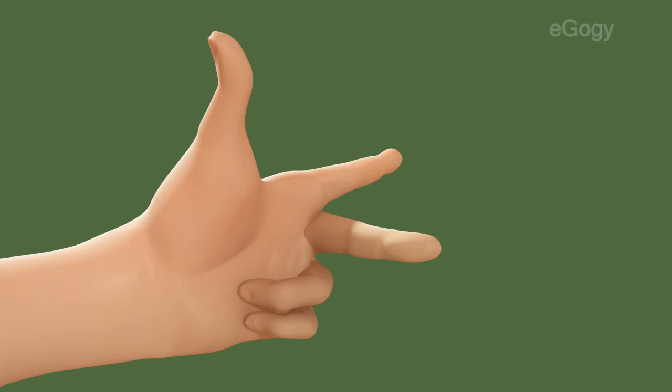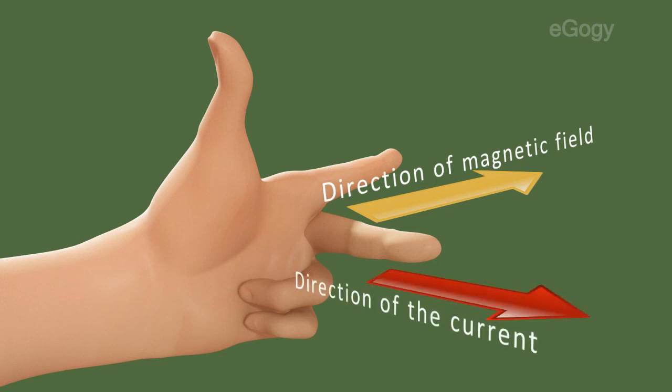The forefinger represents the direction of magnetic field, the middle finger represents the direction of the current and the thumb indicates the direction of the force.